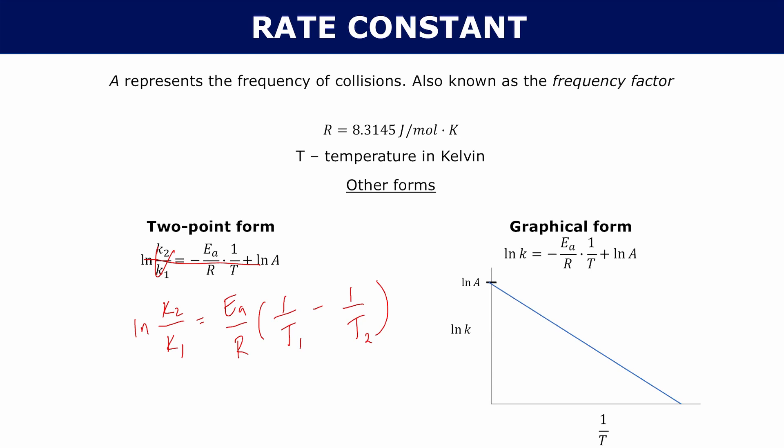The relationship between the two rate constants is modeled by the two-point form. The graphical form is the more common version, and it tells you that the natural log of k is equal to minus Ea over R times 1 over T plus the natural log of A.